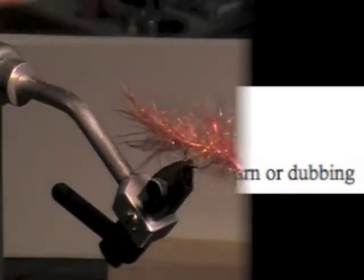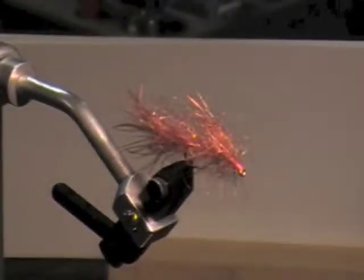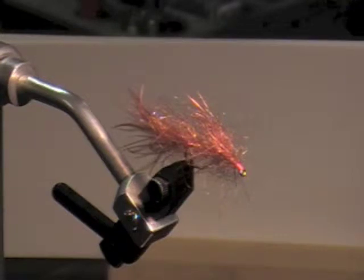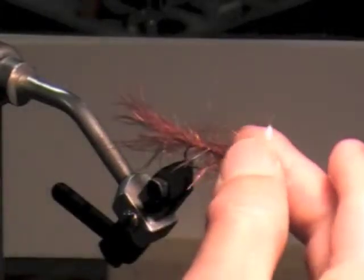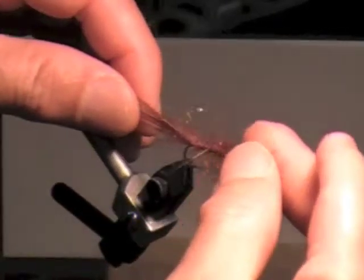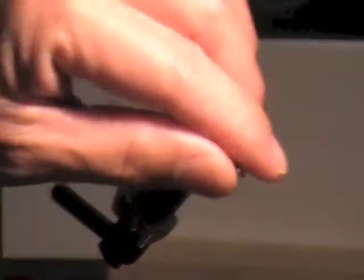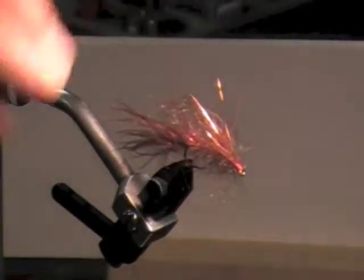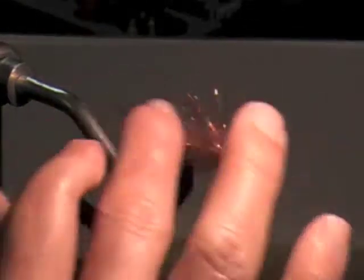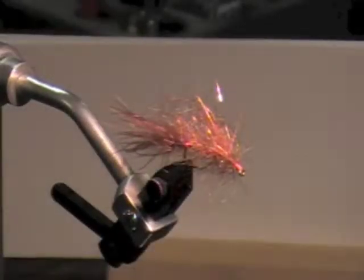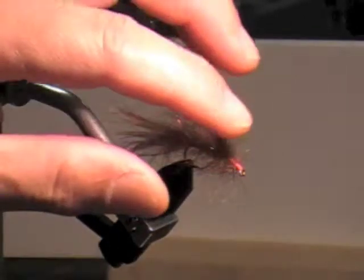This fly is called the Canadian Brown Mohair Leech. At least the guys who tie it tell me that's what it's called. And it's nothing more than just a little bit of marabou for the tail and mohair for the body. There's no ribbing, there's nothing in there, but it's very particular in the way that it's mixed.